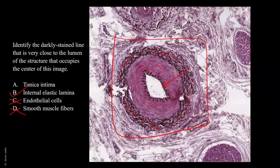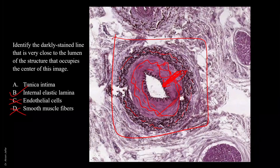The elastic arteries will have elastic plates or plates of elastic fibers throughout the thickness of the tunica media. So we will not get a segregation between internal elastic lamina and external elastic lamina — they are all elastic lamina.